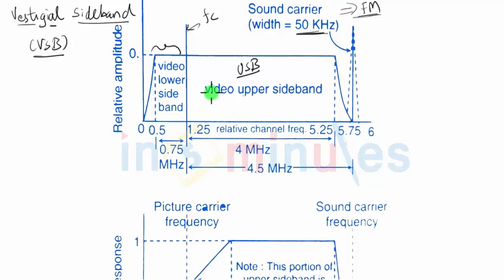So you get 4 megahertz of upper sideband and 0.5 megahertz of margin. So you get 4.5 megahertz and then there will be a small part of the sound signal also.